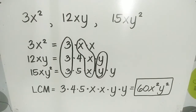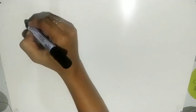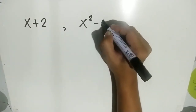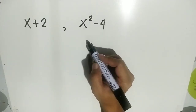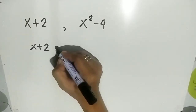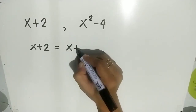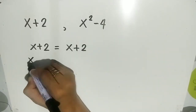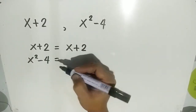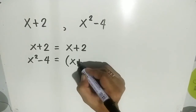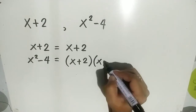What if you are given a binomial or trinomial? How are you going to find the LCM of those polynomials? Let's have an example. We have x plus 2 and x squared minus 4. Using the same process, we factor each polynomial. x plus 2 is a binomial, so we write x plus 2. x squared minus 4 is a difference of two squares, so its factors are x plus 2 and x minus 2.